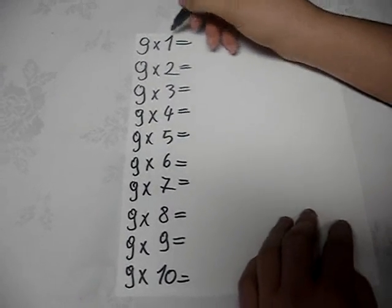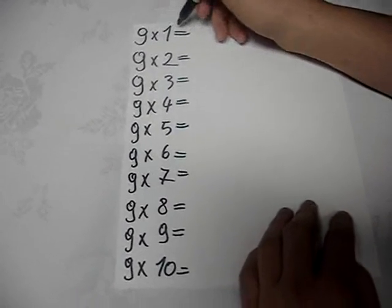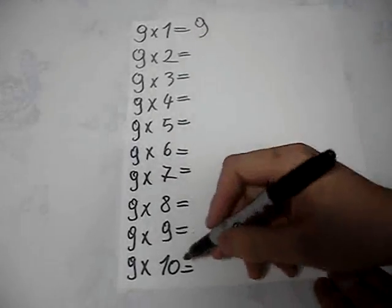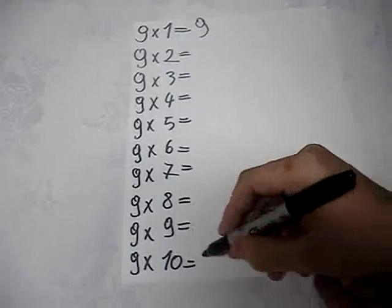First, write 9 times 1, and everyone knows it is 9. Then write 9 times 10, and you know it is 90.